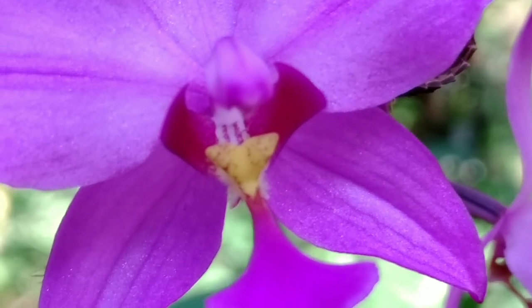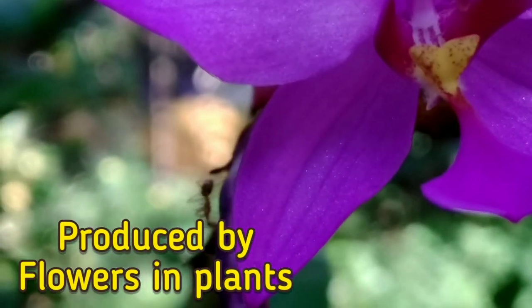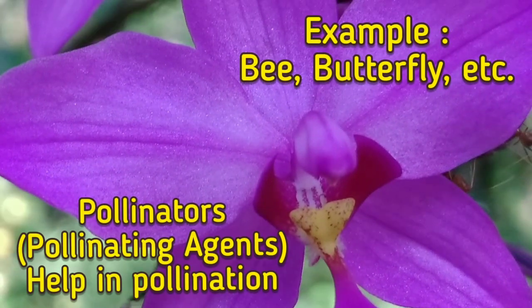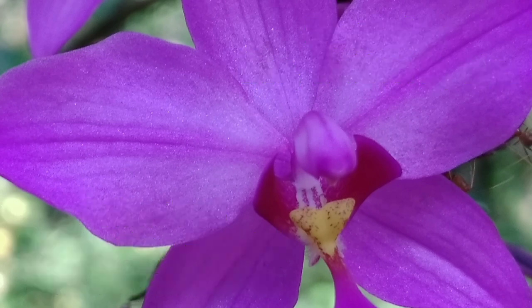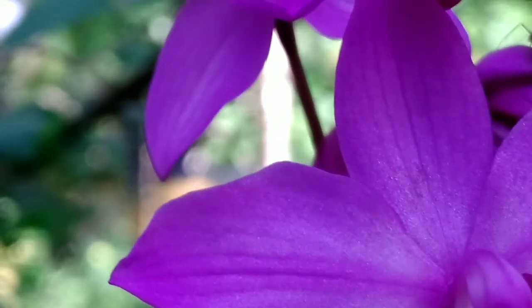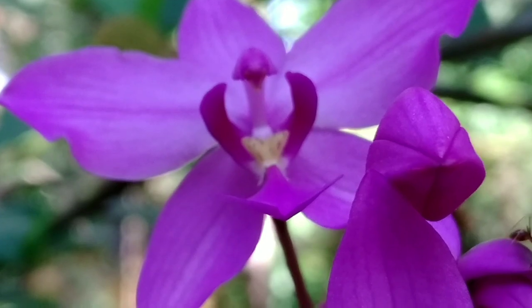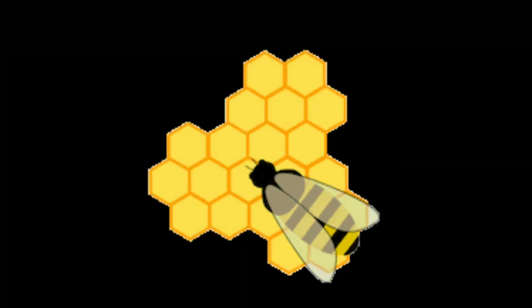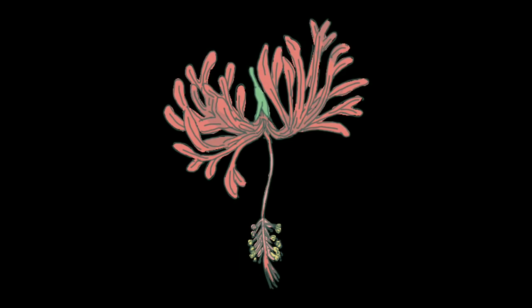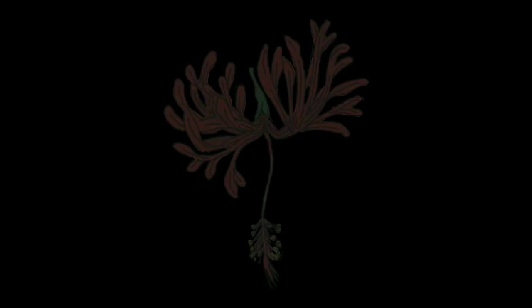Let's discuss the first question: what is nectar? As you all must be knowing, nectar is a liquid substance produced by plants to attract pollinators. Nectar is sugar-rich and is also found in different colors, like yellow to red. Sometimes it can be found in other colors like brown and black.